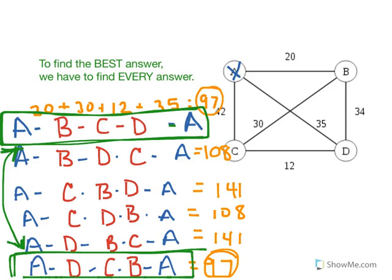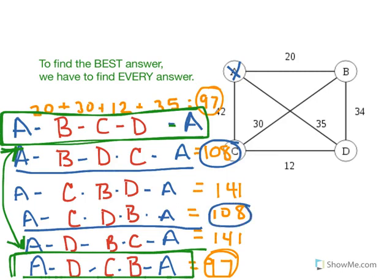We can see the same is true for the other pairs of values. A-B-D-C-A matches here going the other direction, and notice these both have the score of 108. Finally, the most expensive trip, 141, forwards and backwards, which means each of these trips we ended up doing twice, and we didn't have to.